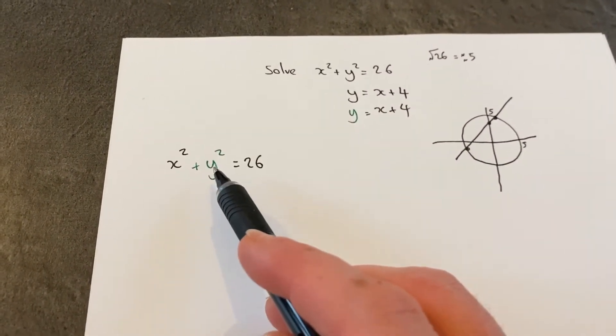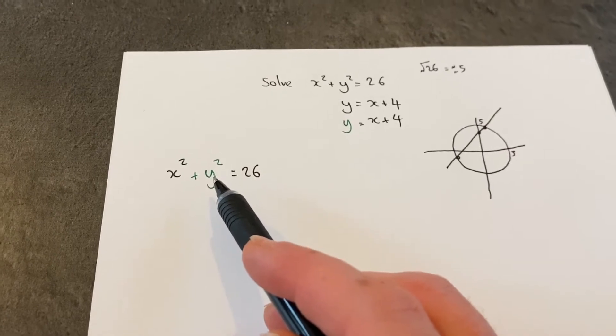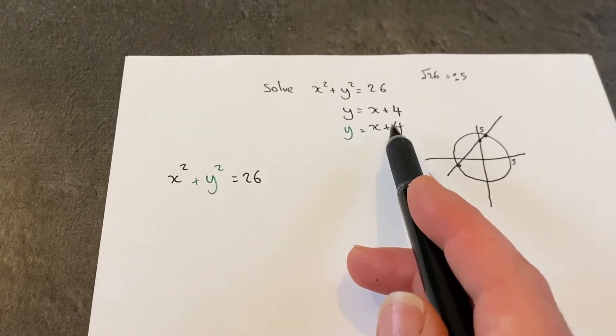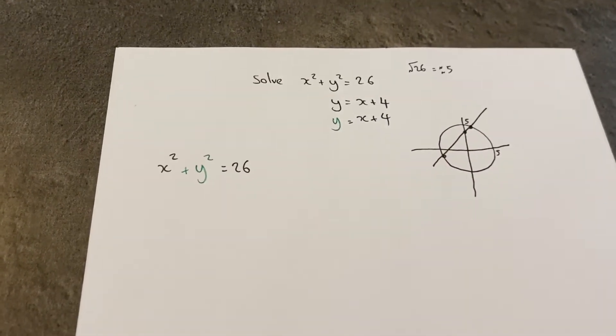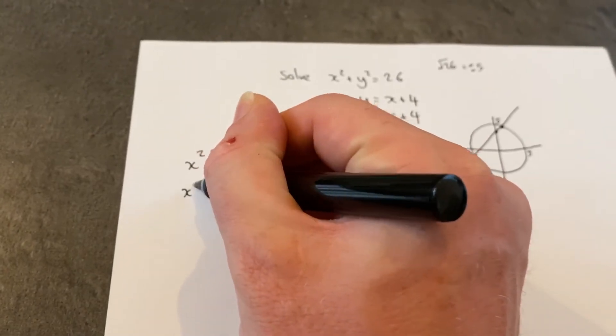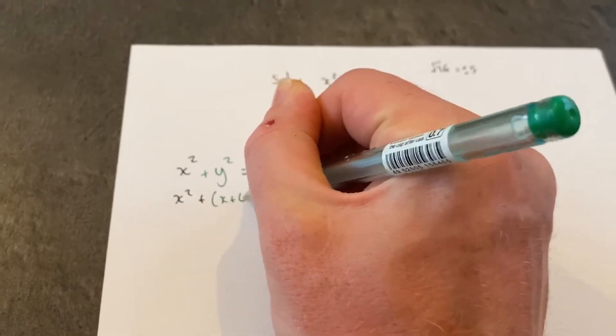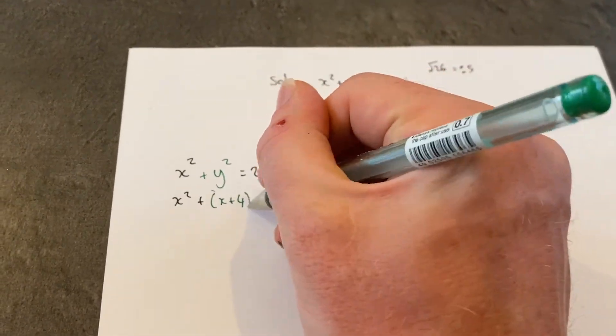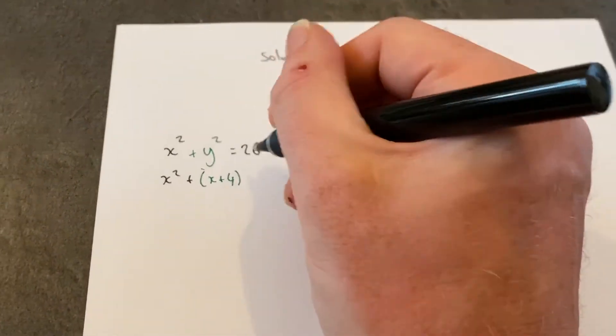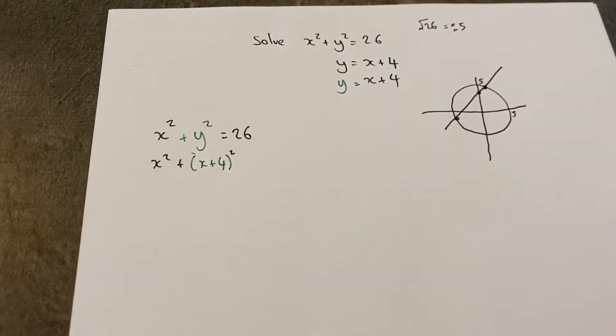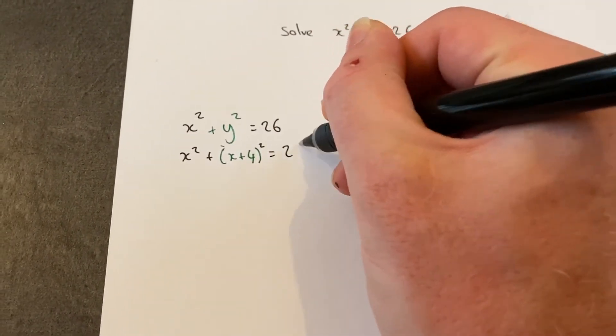So where this y is in this equation, I can replace it by x plus 4. It becomes x squared plus the y, which is the same as x plus 4, and it's been squared. This must equal 26.